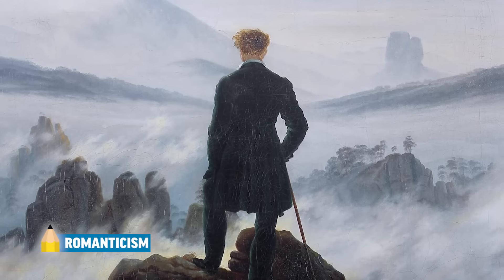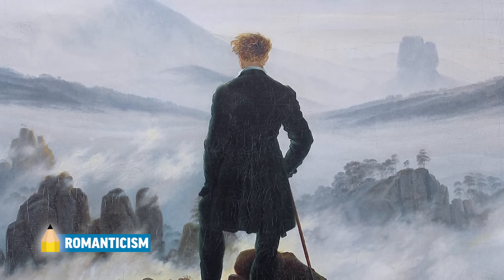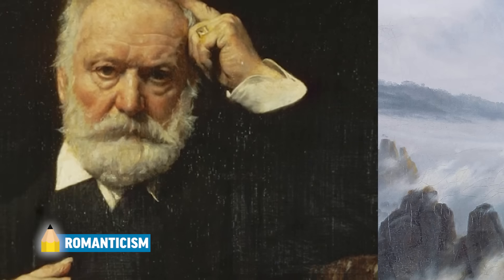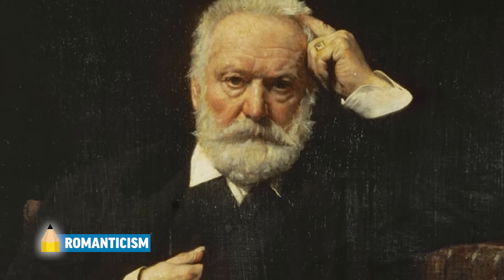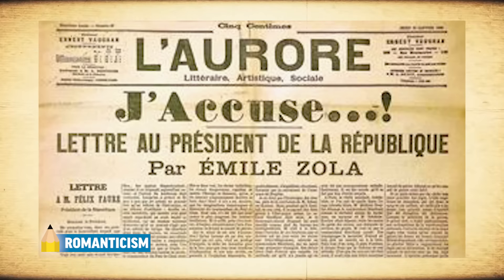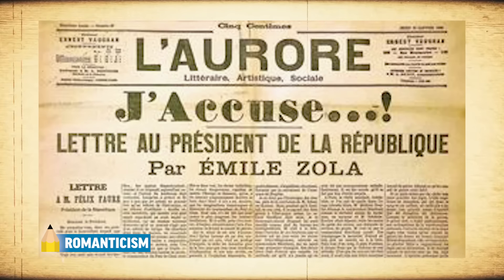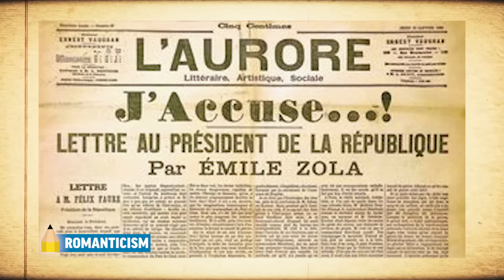Art reflects these social upheavals, as it always does, and the Romantic movement emerges. Romanticism emerges as a response to the Enlightenment's focus on rationalism and reason, and also to industrialization's effects on the environment. Romantic artists like Friedrich focus on landscapes and nature, and writers like Victor Hugo focus on emotion and individuality. Realism also emerges, and writers like Émile Zola utilize their craft to address social problems — in this case, anti-Semitism.